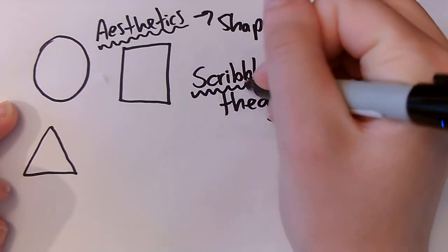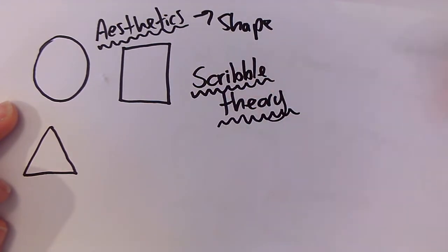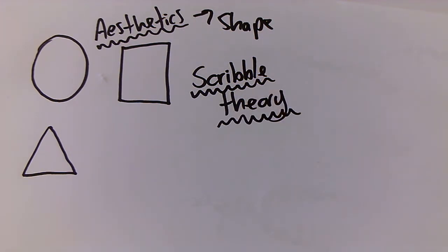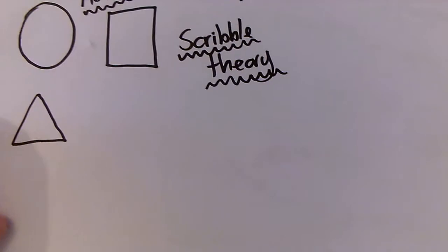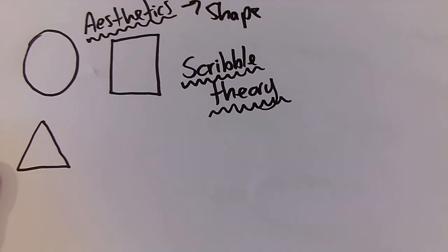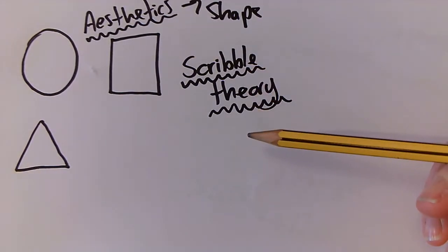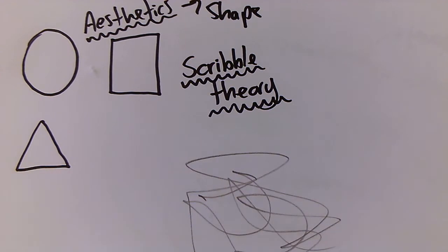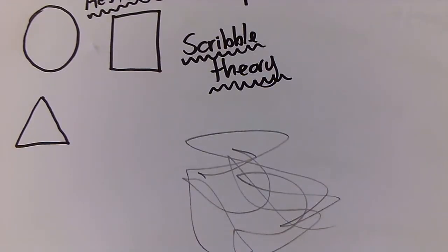This is probably one of my favourite drawing techniques. I'm just going to change my Sharpie for a pencil. Let me show you what I mean. Scribble Theory is simply taking a pencil or some kind of writing instrument and drawing a scribble on your page. So far so good.